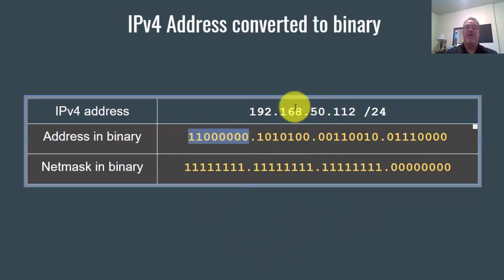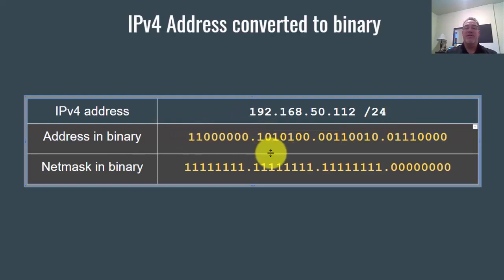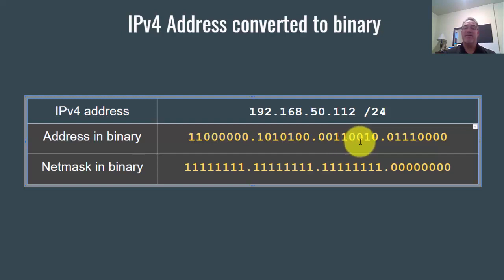This is 192.168, this is 50, and this is 112. Now let's verify: 128 plus 64 is 192; 128 plus 32 is 160, plus 8 is 168; 32 plus 16 is 48, plus 2 is 50; and for 112 — 64 plus 32 is 96, plus 16 is 112. Perfect.